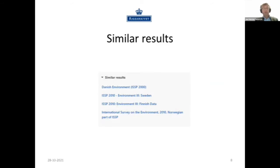Another great feature in the SESTA Data Catalog is the 'Similar Results' section, where you can find surveys similar to the one you've found. In this case, we can see the Danish Environment Study from 10 years earlier, but also environment studies from Sweden, Finland, and Norway. As mentioned, this is a type of survey conducted in 47 different countries, and it might be relevant and interesting to do cross-national comparisons.